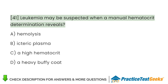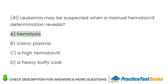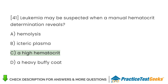Leukemia may be suspected when a manual hematocrit determination reveals: A. Hemolysis. B. Icteric plasma. C. A high hematocrit. D. A heavy buffy coat.